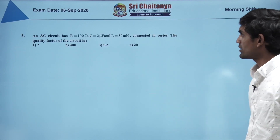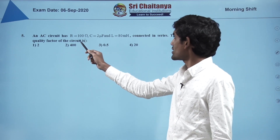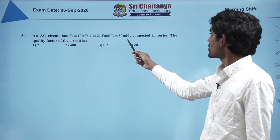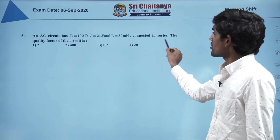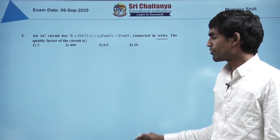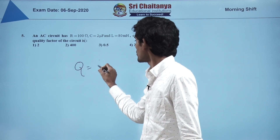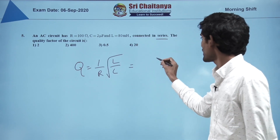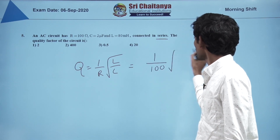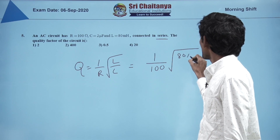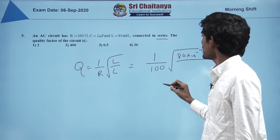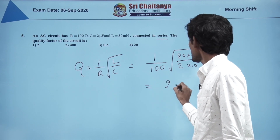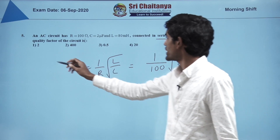Coming to the next question: an AC circuit has R = 100 Ω, capacitance = 2 μF, and inductance = 80 mH connected in series. The quality factor is a direct formula: Q = (1/R)√(L/C). Substituting: (1/100)√(80×10⁻³ / 2×10⁻⁶). Solving this gives the answer as 2, which is the first option.